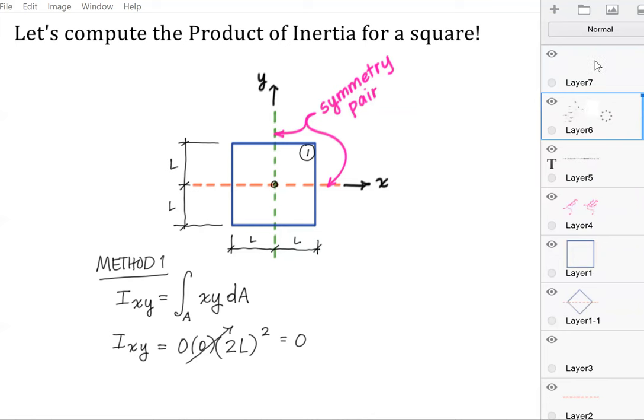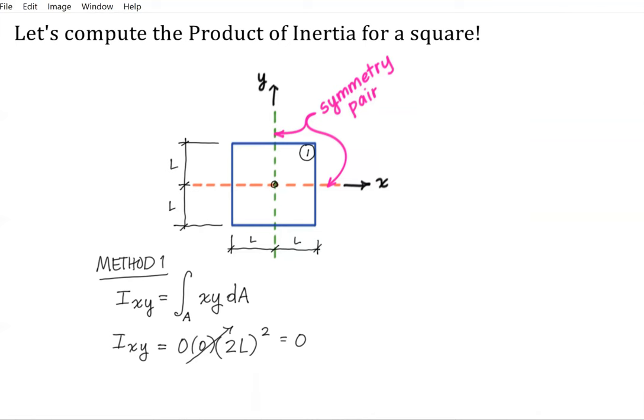Alright, let's go ahead and do this breaking that area down. So now I'm going to have not just square number one, but also square number two. So I'm going to break this up here. Square number three and square number four. We'll call this method two.